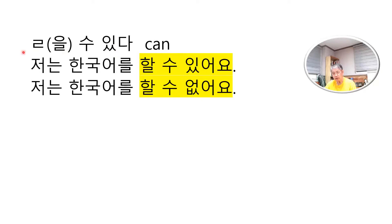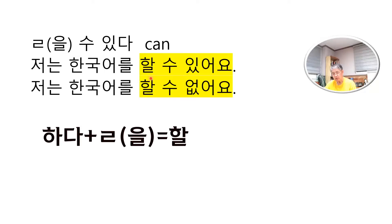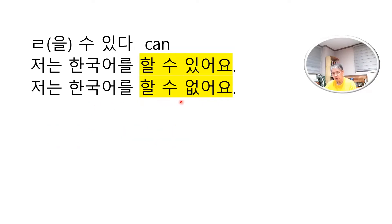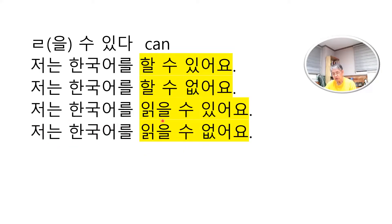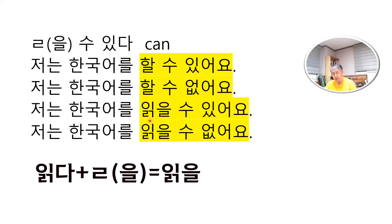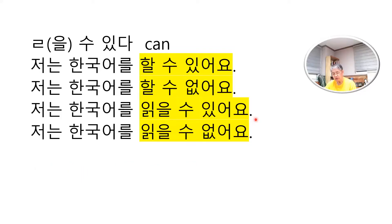을 수 있다 means 'can.' 을 수 없다 means 'cannot.' 저는 한국어를 할 수 있어요 — 하다 combined with 을 수 있다 gives 할 수 있어요, meaning 'I can speak Korean.' 저는 한국어를 할 수 없어요 — I cannot speak Korean. 저는 한국어를 읽을 수 있어요 — 읽다 has a final consonant, so you put 을 after it: 읽을 수 있어요, meaning 'I can read Korean.' 저는 한국어를 읽을 수 없어요 — I cannot read Korean.